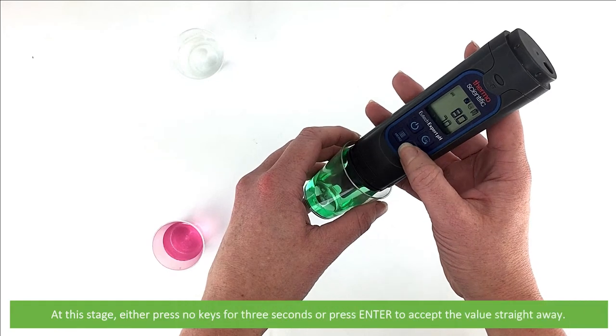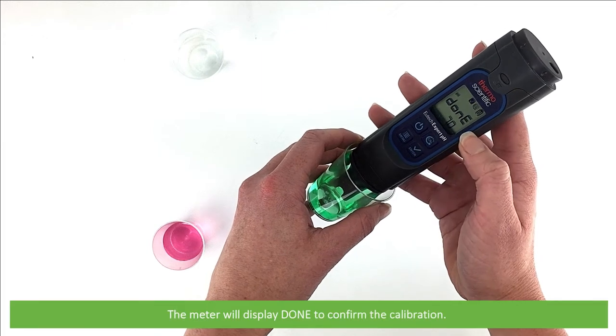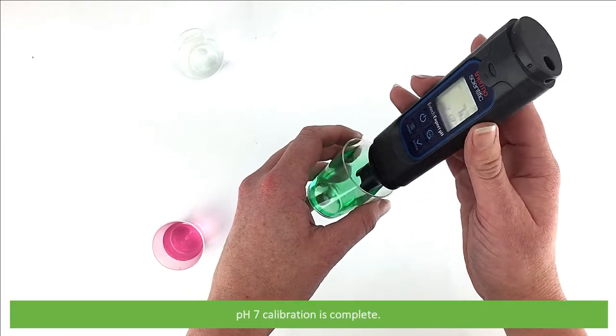At this stage you can either press no keys for three seconds or press enter to accept the value straight away. The meter will display DONE to confirm the calibration. pH 7 calibration is complete.